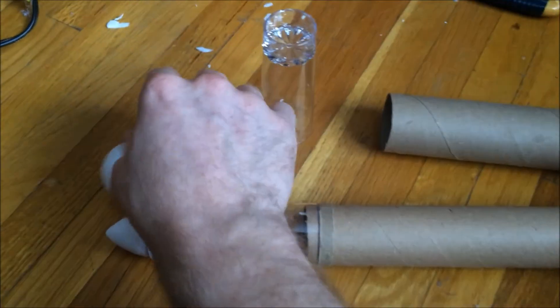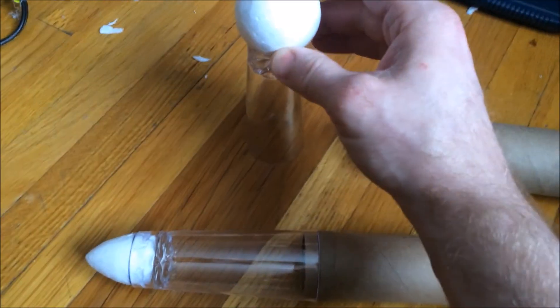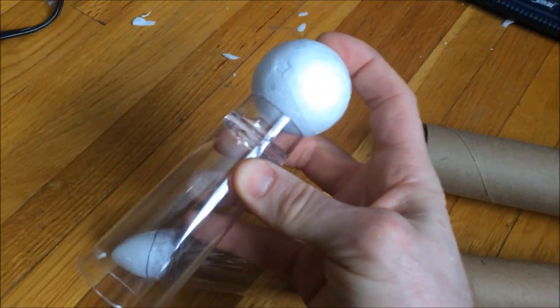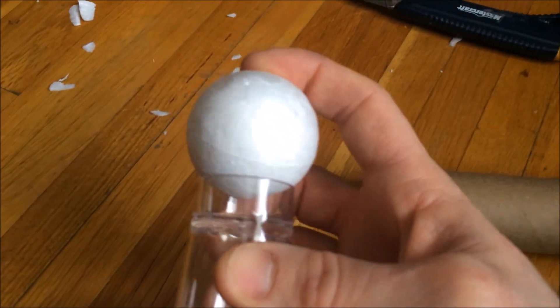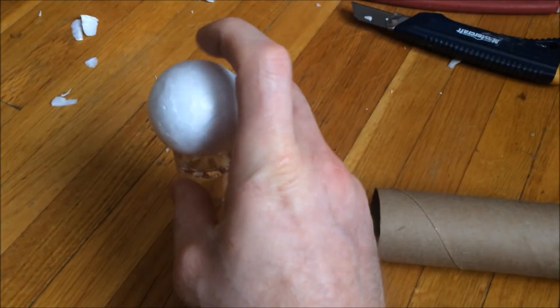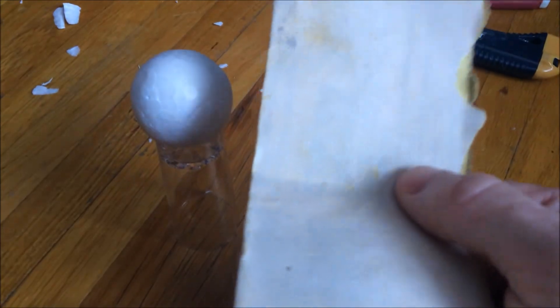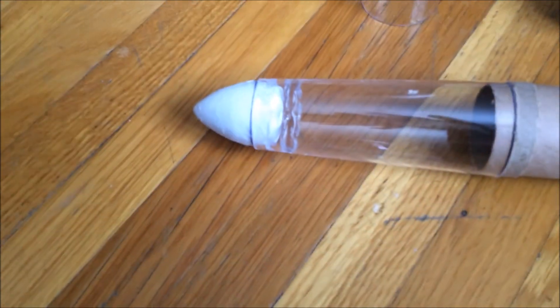So all you do is you hot glue this onto here, and then I used an Exacto knife and whittled it down to a basic cone shape, and then used sandpaper to finish it off until I got a nice round look.